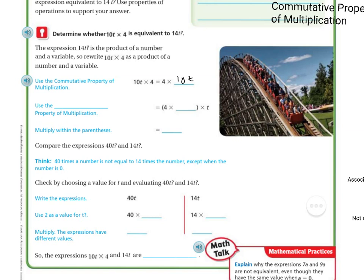And if we use the Associative Property, then we would have 4 times 10, and then we would have the times T on the outside, because the Associative Property, remember, we're just kind of moving over the parentheses. If we multiply within the parentheses, then 4 times 10 is 40.